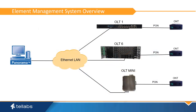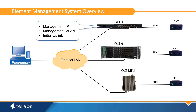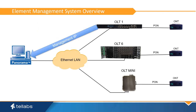The management system recognizes the OLT-1, OLT-6, and OLT-mini as network elements. Each network element is identified by a management IP address, which is provisioned into the shelf when the node is first commissioned. Commissioning of the OLT involves provisioning of the management IP, VLAN, and uplink configurations locally to the OLT via serial port connection. Once the OLT has been turned up, the network element is added to the Panorama EMS as a managed system.